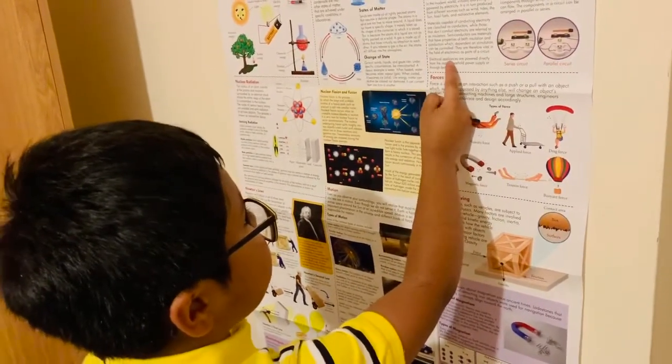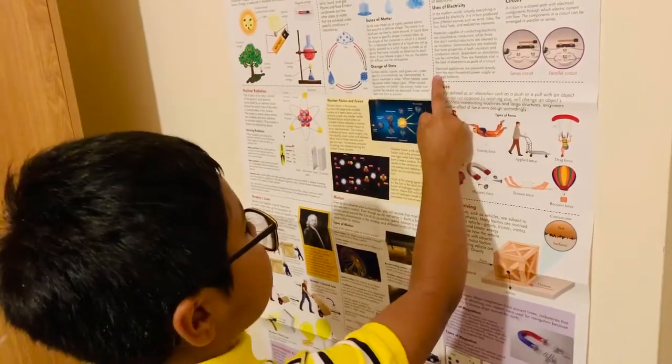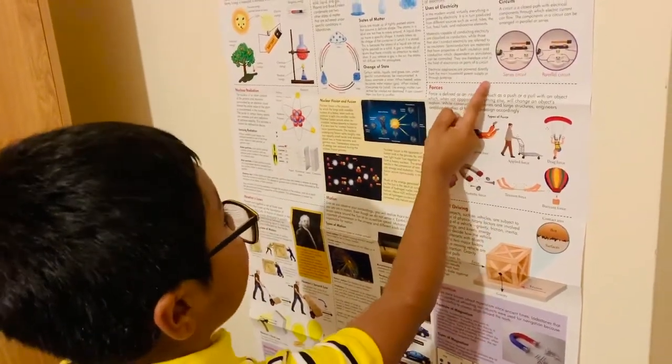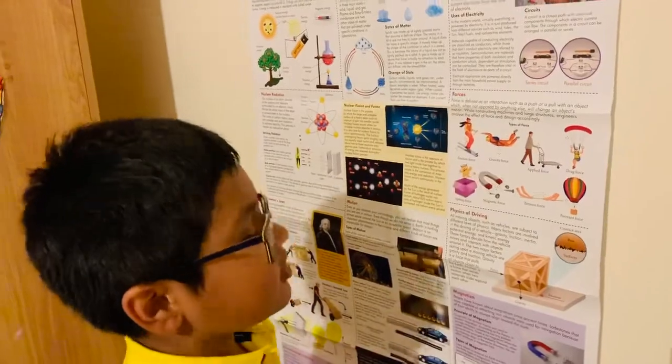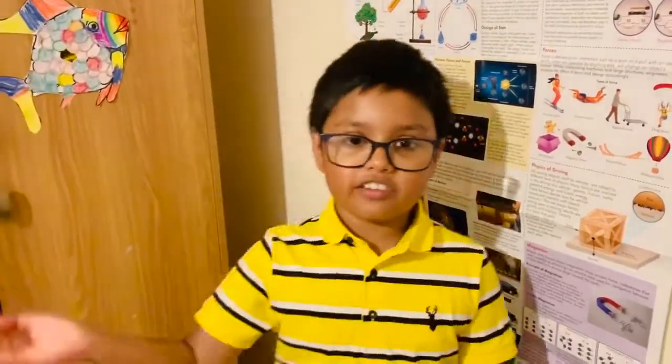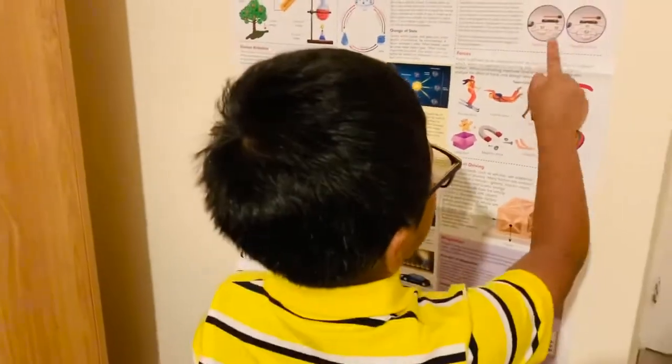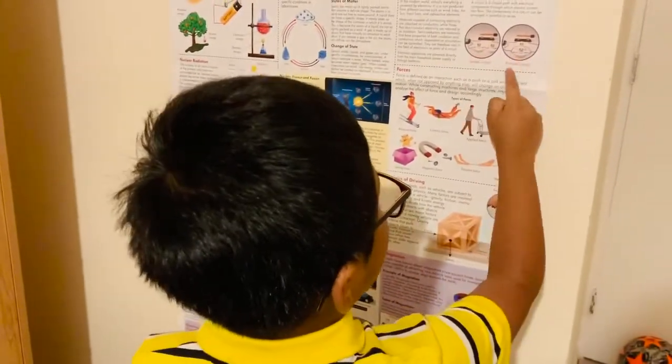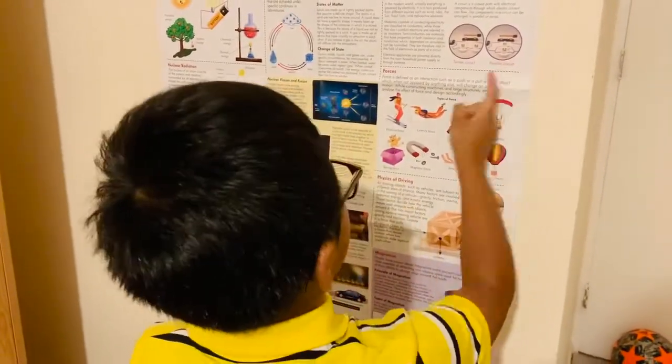Electrical appliances are powered directly from the main household power supply or from batteries. So like an example, a TV is powered through a process. So this is a series circuit and then this is a parallel circuit.